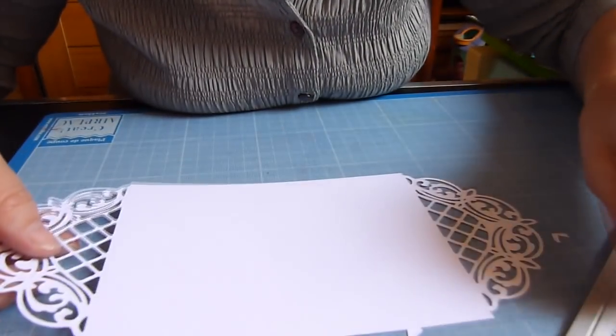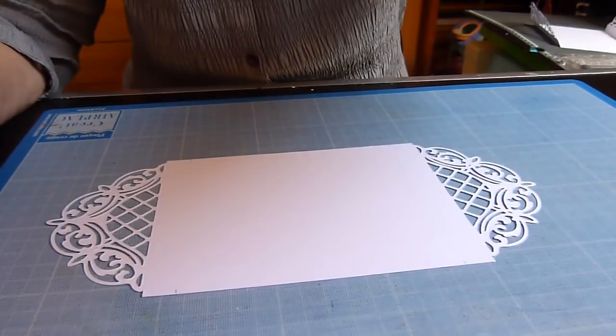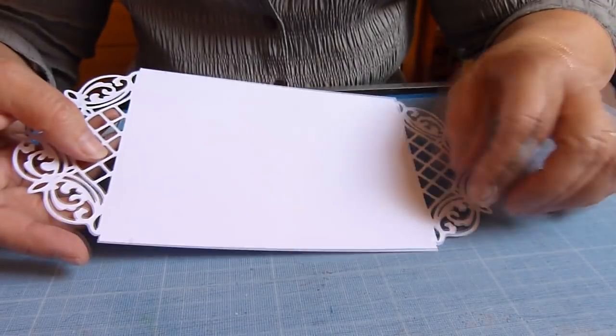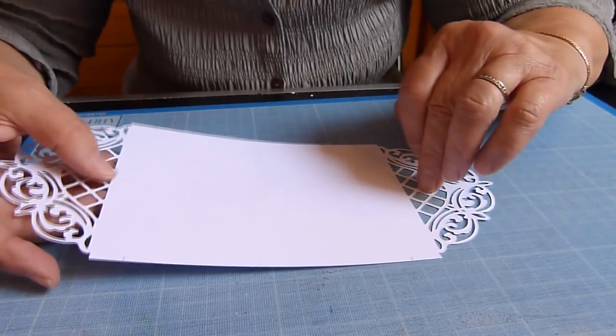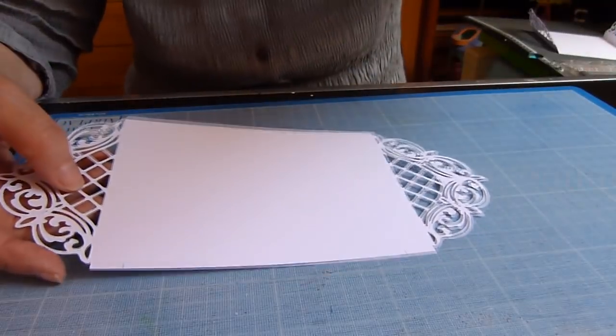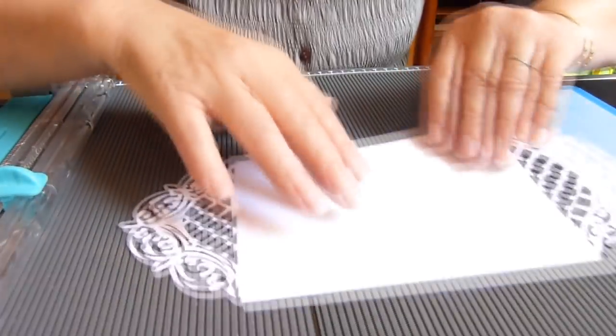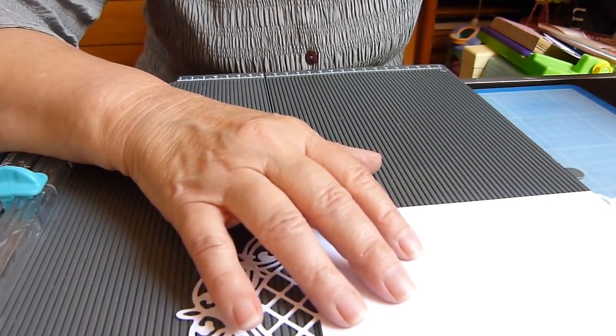Il ne reste plus qu'à faire les pliures à un centimètre et demi de chaque côté. J'ai fait mes repères à un centimètre et demi du bord de mes découpes de petits losanges. Maintenant, il ne reste plus qu'à faire mes pliures.